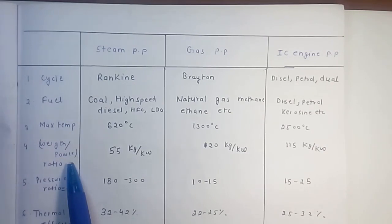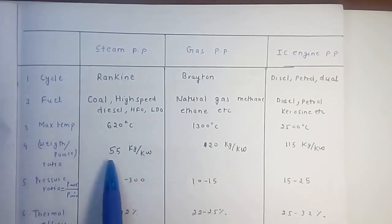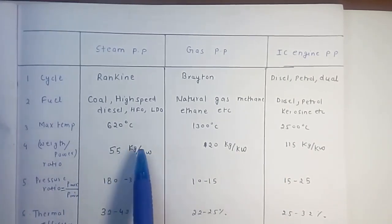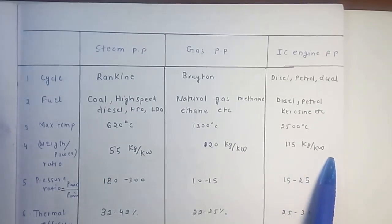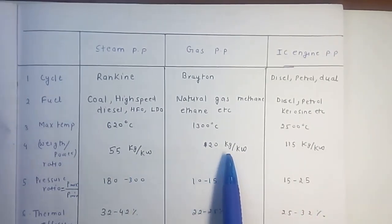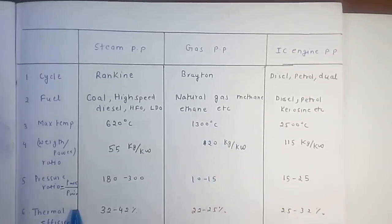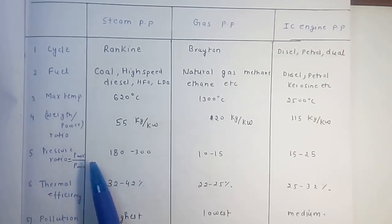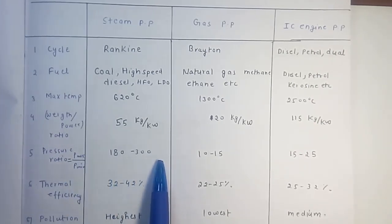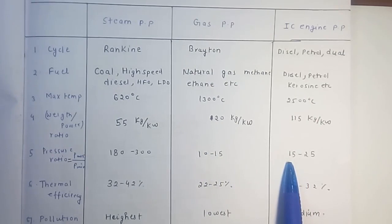Comparing weight-to-power ratio: for 1 kilowatt of power, a steam power plant requires about 55 kg, a gas power plant requires about 20 kg, and an IC engine requires about 115 kg per kilowatt. So the gas turbine power plant has the lowest weight-to-power ratio. Regarding pressure ratio (P_max / P_min): steam power plant has 180 to 300, gas turbine power plant has 10 to 15, and IC engine has 15 to 25.